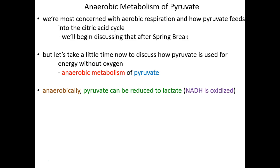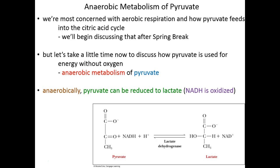Anaerobically, pyruvate can be reduced. Obviously, if it's being reduced, something else is being oxidized, but it can be reduced to lactate. In order to catalyze that reaction, we need NADH. NADH is the electron donor allowing pyruvate to be reduced into lactate, and then NADH becomes oxidized to NAD+. It's a one-step reaction catalyzed by the enzyme lactate dehydrogenase — named for the reverse reaction. Pyruvate gains electrons and protons to become lactate, and NADH is losing and donating those protons and electrons to make that possible.